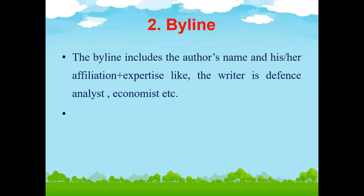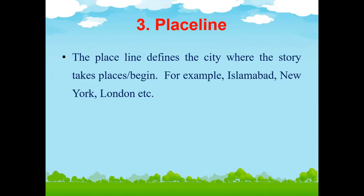The byline means the expertise, name, and affiliation of the writer. The placeline defines the city where the story takes place and begins — for example, Islamabad, New Ireland.